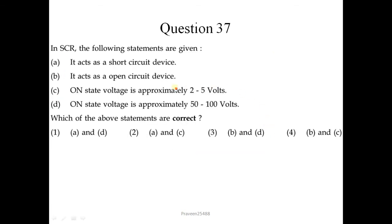Question number 37: in SCR, the following statements are given. It acts as a short circuit device — this is correct. It acts as an open circuit device — this is not correct. On-state voltage is approximately 2 to 5V — this is correct. On-state voltage approximately 50 to 100V — this is not correct; SCR is not supposed to have such large on-state voltage. So A and C are correct; the second option is correct.